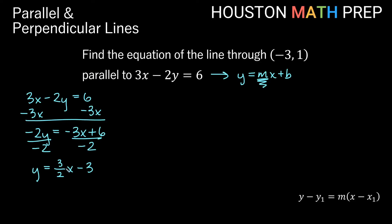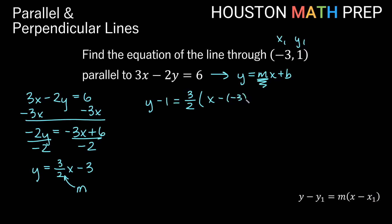The part we care about from this line is that we want parallel to it, so we only care about the slope. We're going to use a slope of three halves, but we want the line to go through the point (-3, 1). Using the point-slope equation: y minus y1 is y minus 1 equals m — which is three halves from the other line — times x minus x1, which is x minus negative 3. Writing that as plus 3: y minus 1 equals three halves times the quantity x plus 3.